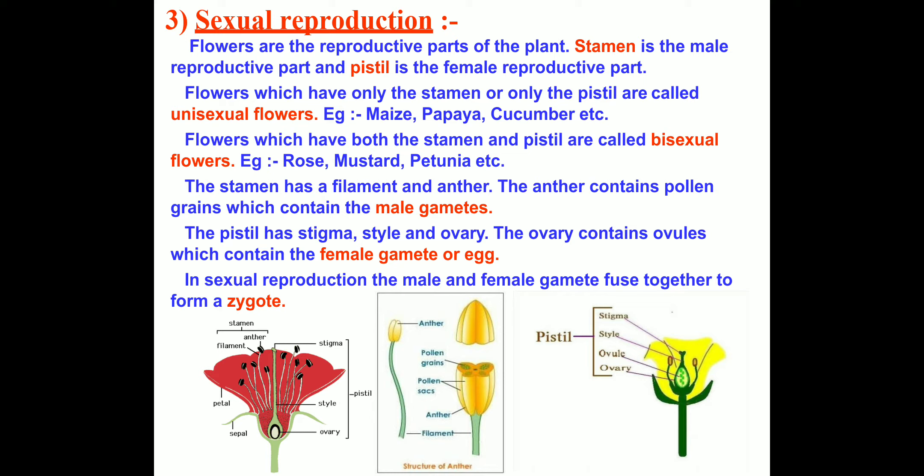Regarding the female reproductive part of the flower, which is called the pistil, you can see in this figure it has stigma, style, and ovary. Ovary is the swollen portion at the base, stigma is at the top, and style is a tube-like structure. It contains the ovule, which contains the female gamete or egg.